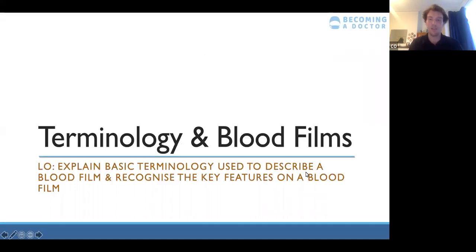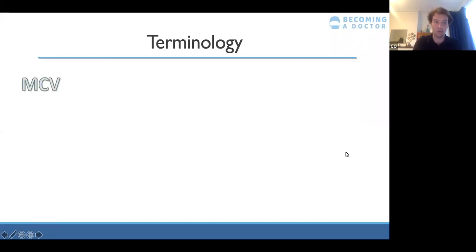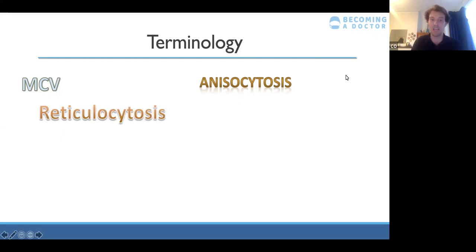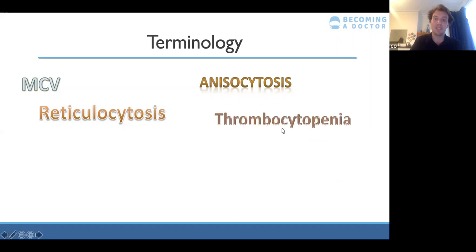A few key definitions: MCV stands for mean cell volume, used when looking at red blood cells to say if a cell is normal size, too small, or too big. Anisocytosis means a change in the size of red blood cells — a term you'll see on a blood film. Reticulocytosis is an increase in reticulocytes, which are immature red blood cells about 20% bigger than normal. Thrombocytopenia — 'penia' means low — so this is a low platelet count, since thrombocytes is another word for platelets.